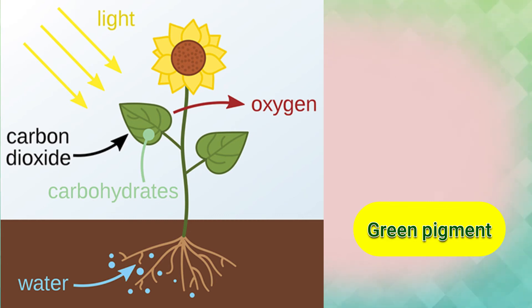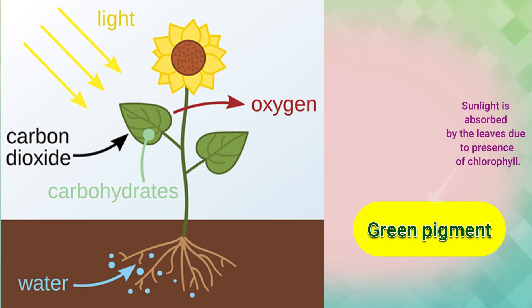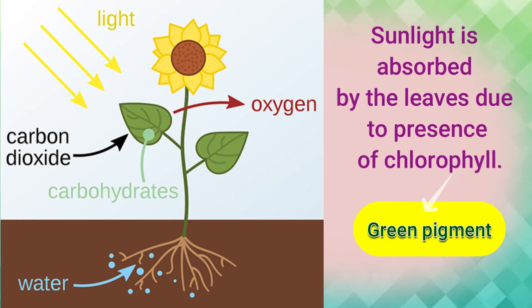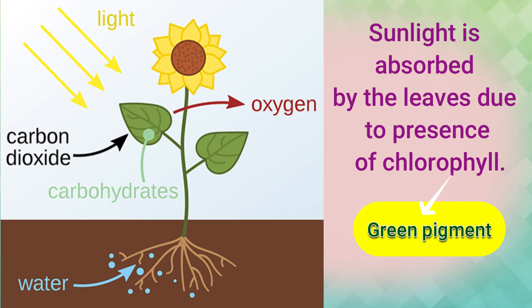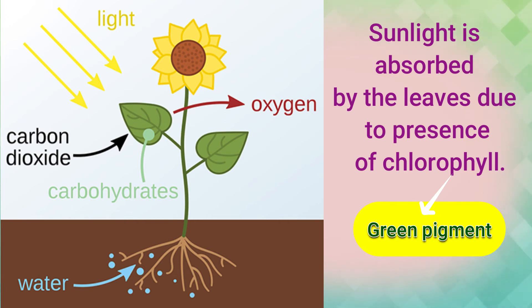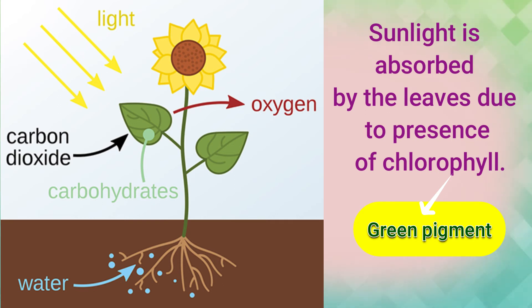Sunlight: sunlight is absorbed by the leaves due to the presence of chlorophyll. Chlorophyll is a green pigment present in green plants, so the color of plants is green due to the presence of chlorophyll.